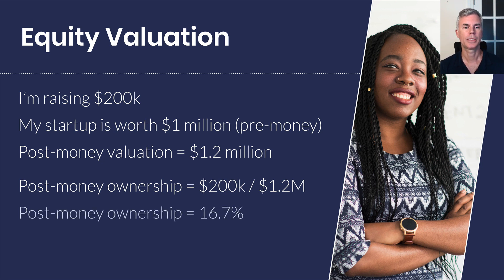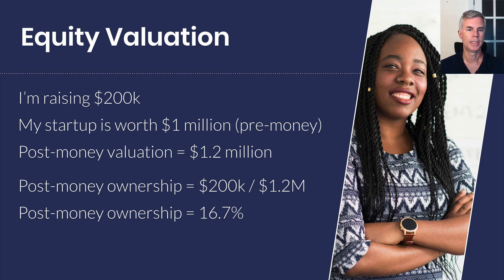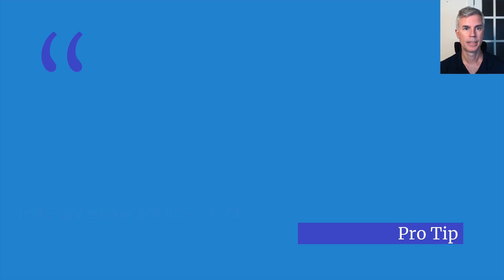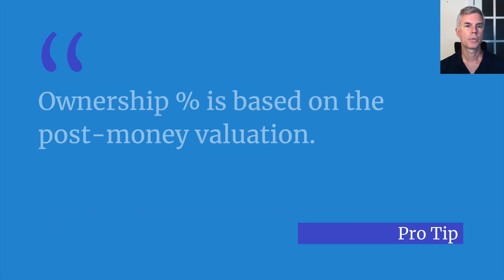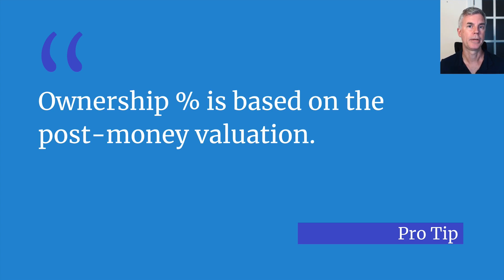So the investor actually owns one-sixth of the company — two-twelfths. $200,000 divided by $1.2 million is two-twelfths, or one-sixth, which is 16.7% of the company. Just remember that the ownership percentage is based on the post-money valuation, not the pre-money valuation.